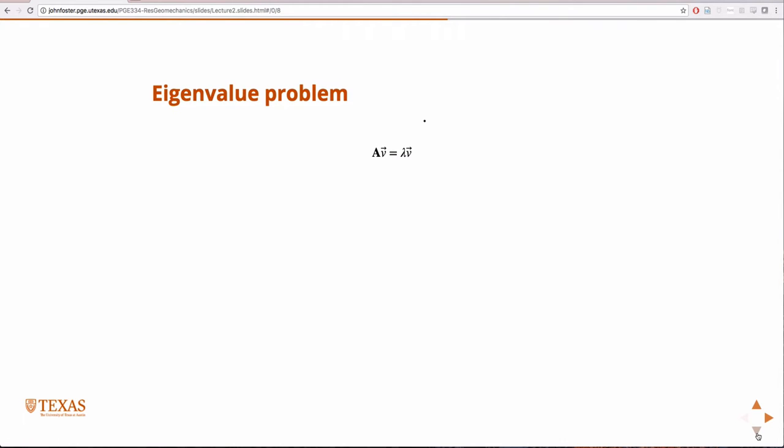So the eigenvalue problem, we talked a little bit about last time. It's pretty common in engineering. But basically, if you have a matrix A and a vector V, if there's a vector V that when multiplied by A is equal to a scalar times itself, then that is said to be an eigenvector.